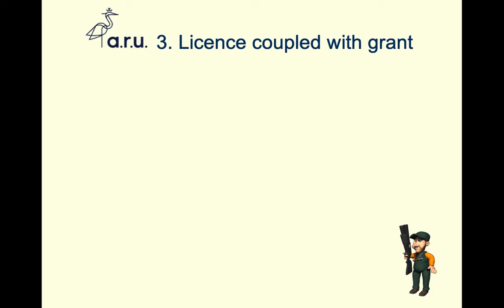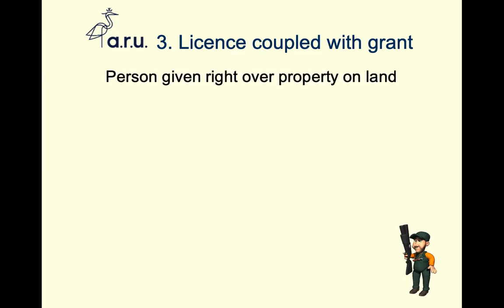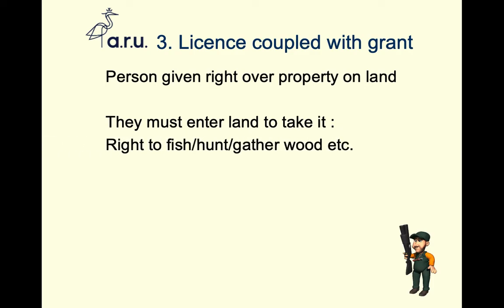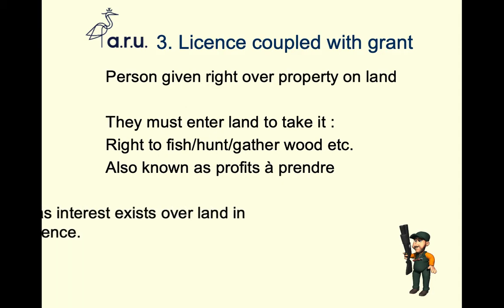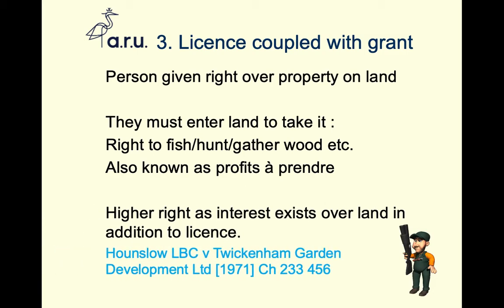The third form of license is a license coupled with a grant. That is the notion of somebody who has been given a right over property on the land and in order to exercise that right they have to enter the land to take it. The rights to fish, hunt, gather wood, fruit, milk — any of that stuff that could come from land or from animals on land. That proprietary right — the profit à prendre — means that in order to benefit from it, they have to get onto the land to get it.